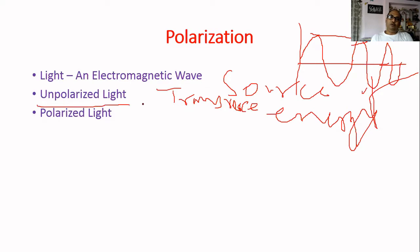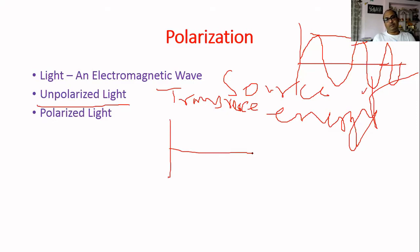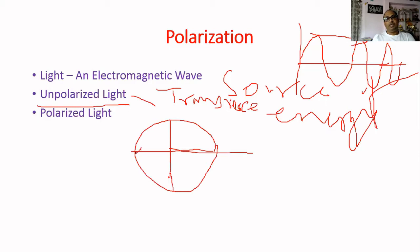Now we will discuss about unpolarized light and polarized light. The light we receive from a bulb, torch light, or even candle light is actually unpolarized light. Unpolarized light means the vibration of the particles will be in all directions. When vibration of particles in all directions is present, that particular light is called unpolarized light.